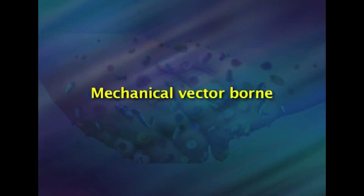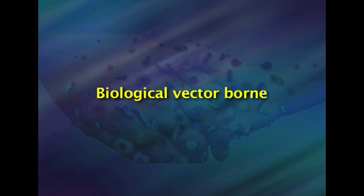Vector-borne transmission is divided into mechanical and biological. Mechanical vector-borne: the vector carries the agent on its body — on its feet or through its gastrointestinal tract — passively excreting it without any multiplication. Biological vector-borne: the agent undergoes replication and/or development in the vector and hence requires an incubation period.